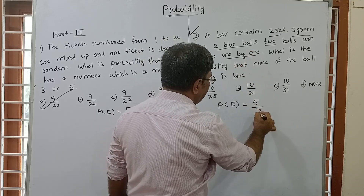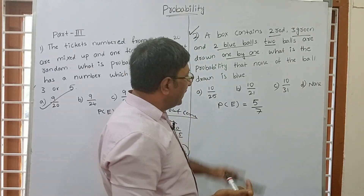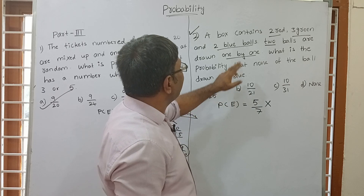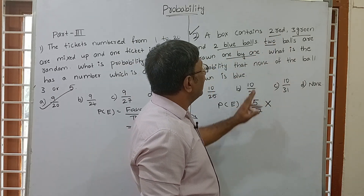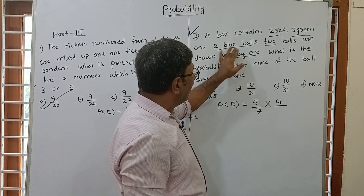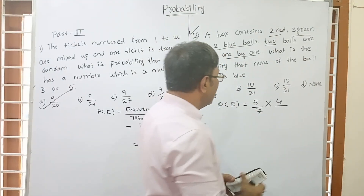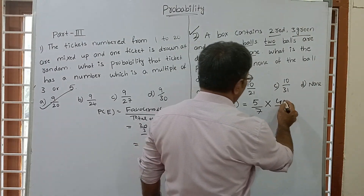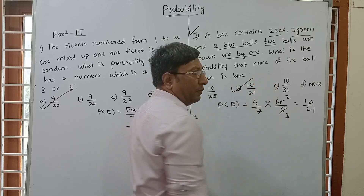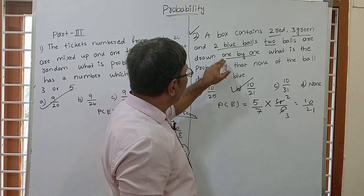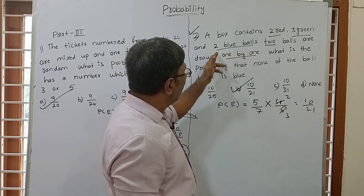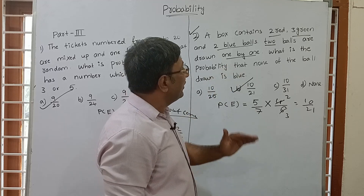We need to find the probability for 2 balls. First ball is non-blue: probability is 5 by 7. The second ball must also be non-blue. We already drew one non-blue ball, so now there are only 4 non-blue balls left. Total balls remaining is 6. So second probability is 4 by 6. Multiply: 5/7 times 4/6 equals 20 by 42, which is 10 by 21.